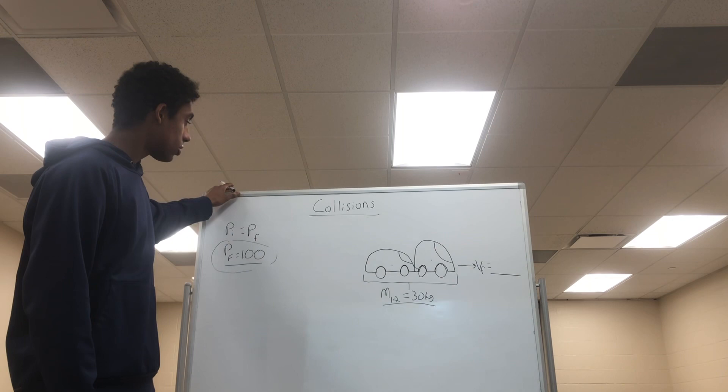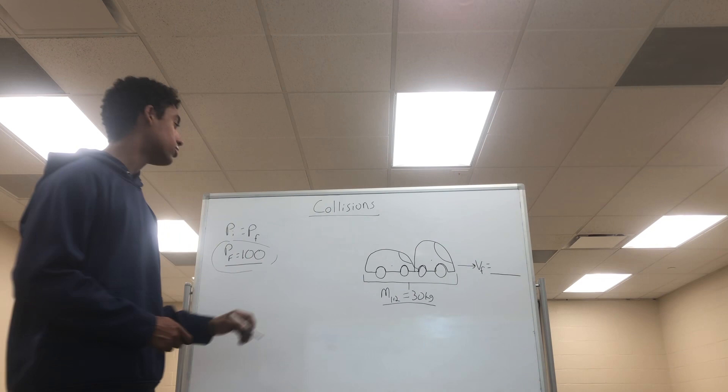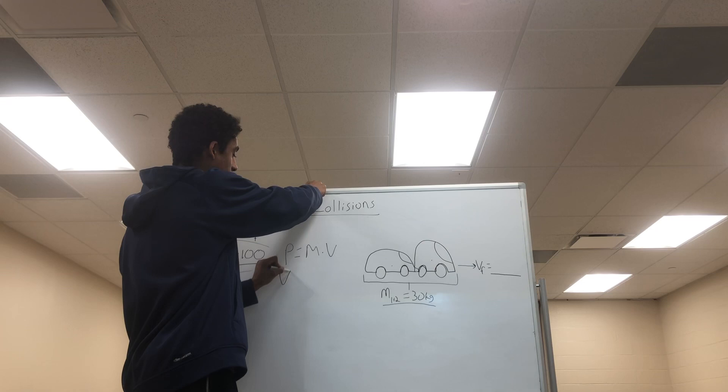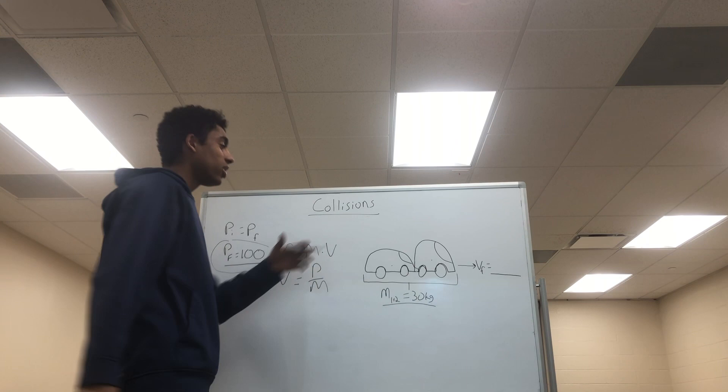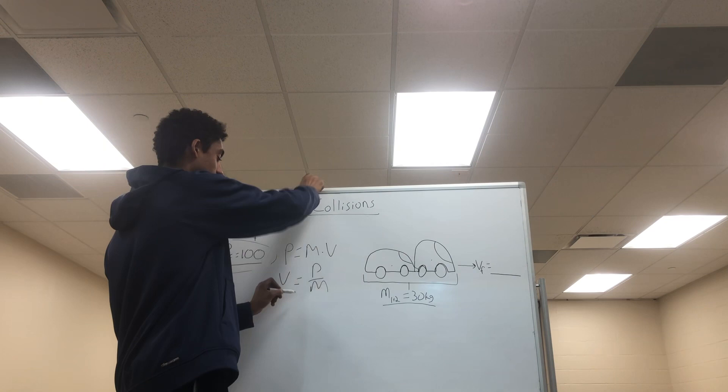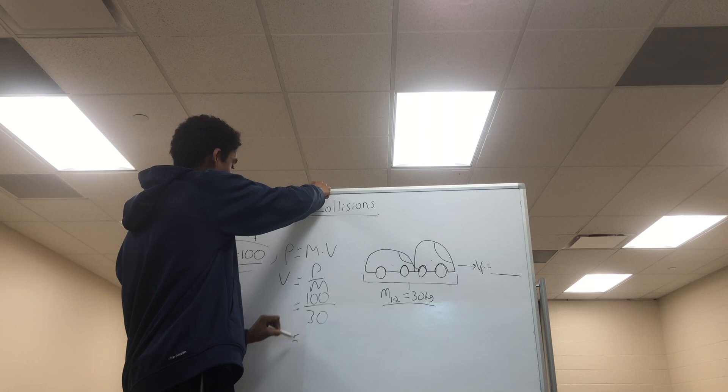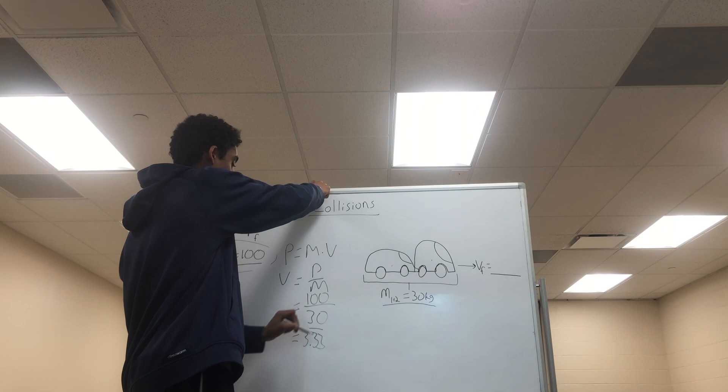Using our equation and rearranging it to solve for velocity, p equals mass times velocity, so velocity equals p over mass. We can solve for the final velocity of this system. 100 divided by 30 gives us 3.33 repeating meters per second.